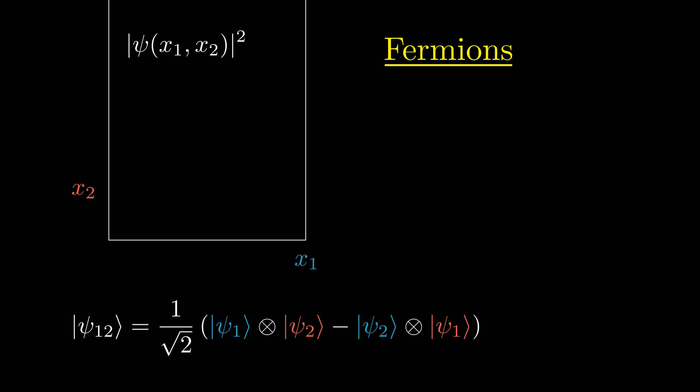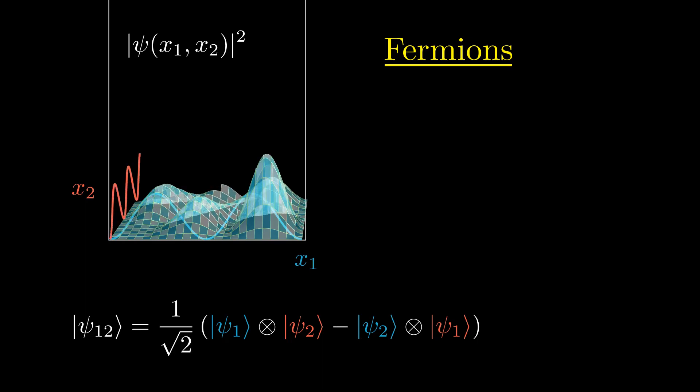Looking again at the two one-particle wavefunctions we saw in the bosonic visualization, observe how we can make a grid of the anti-symmetrized two-particle wavefunction using the expression below. It looks similar to the bosonic wavefunction, only here we find the highest probability of observing the two particles at opposite positions inside the well.